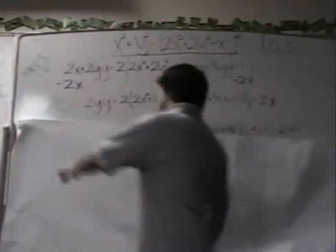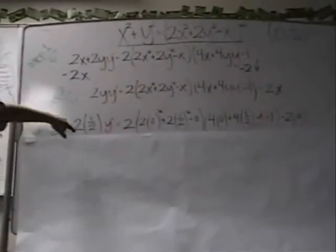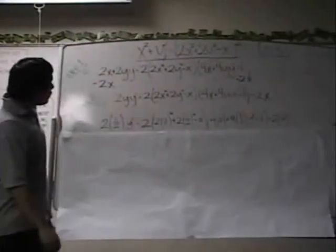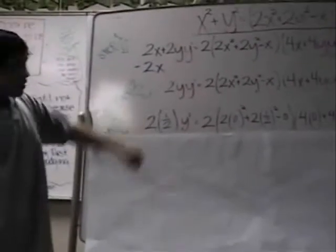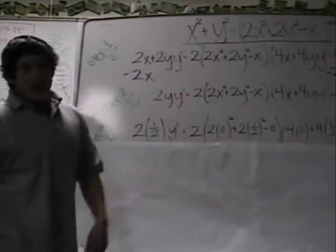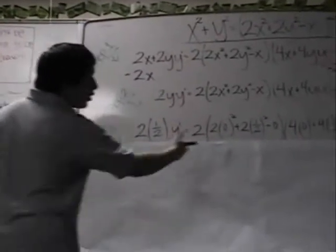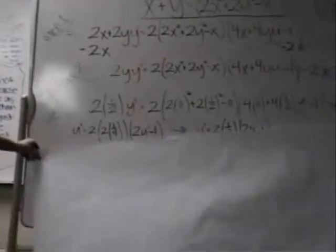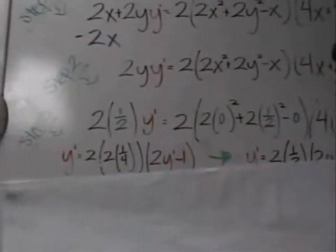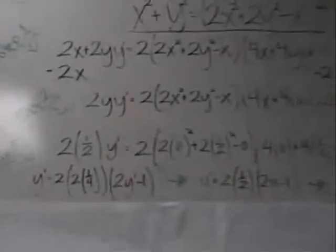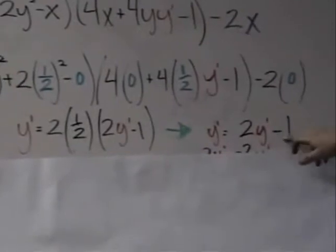Now what we're going to do is plug these points into the equation. This is step 3. You know this is y, so you're going to plug in the y point, and x is 0. Now you're going to have y prime. What's 2 times 1 half? 1. So it's going to be 1 times 1, y prime is y prime. Then you solve this equation. What you're going to come up with is y prime equals 2 times 1 fourth times 2y prime minus 1. When you solve this equation, your final product will be y prime equals 2y prime minus 1.